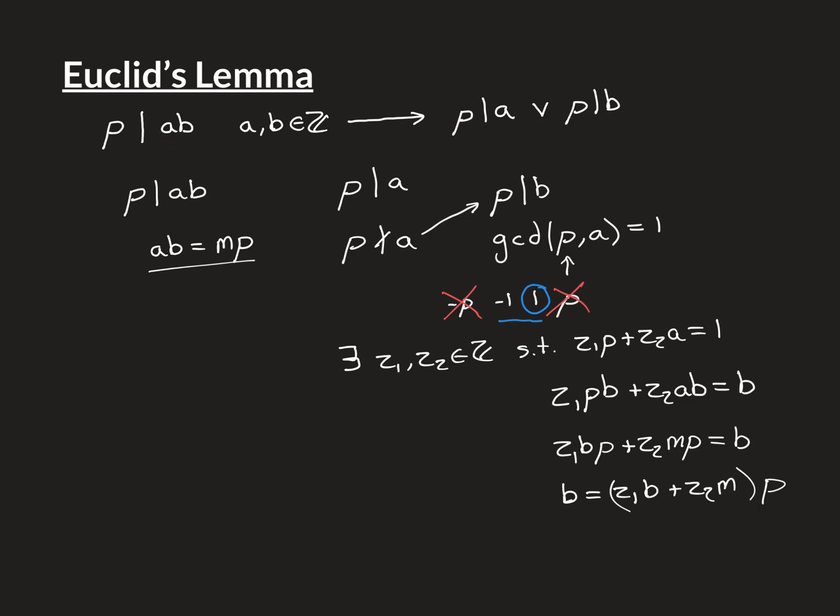Therefore, from this, I can derive this. So that is Euclid's lemma, then, that if P divides the product of two integers, then P must divide at least one of those two integers that were being producted together. We'll finish there. Thank you for watching.